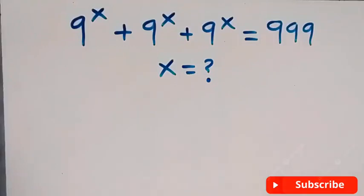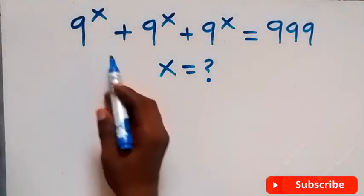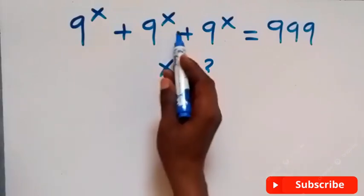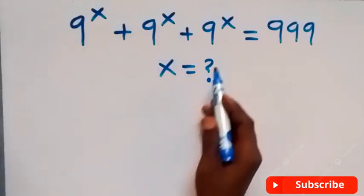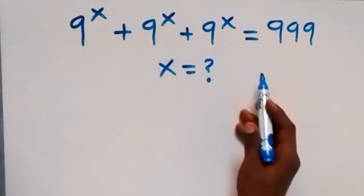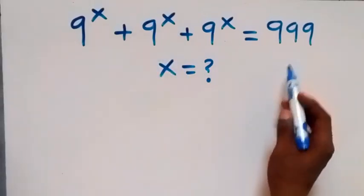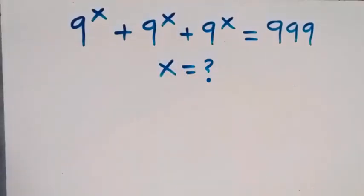Hello, you are welcome. Here is how to solve this nice exponent equation: 9 to the power x plus 9 to the power x plus 9 to the power x equals 999.